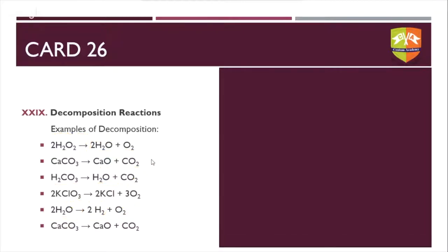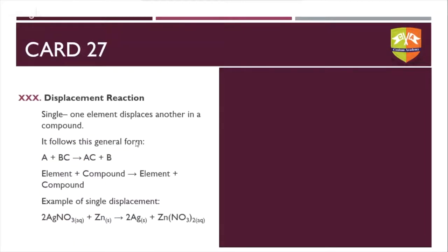The third major type is the displacement reaction, sometimes called single displacement reaction. When talking about single displacement reactions, only one element displaces another one in the compound. The general form is: A + BC → AC + B.